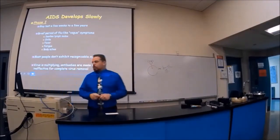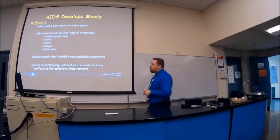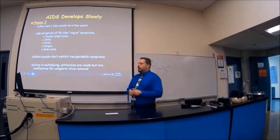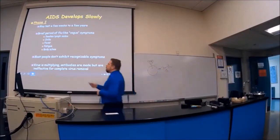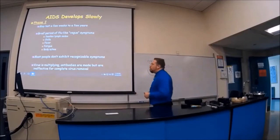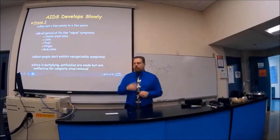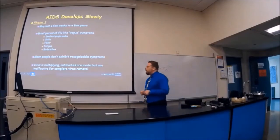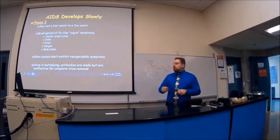So AIDS develops slowly. You've got phase one. And what happens here, it may last a few weeks to a few years. It's different for each person in the variant of HIV. It may start off as a brief period of just flu-like vague symptoms. Swollen lymph nodes, chills, fevers, fatigue, body aches. It's almost like you're taking A and P and that's how you're feeling, right? It's that vague kind of thing that's happening. And most people don't exhibit recognizable symptoms. They don't realize that that's what's happening with them. They've got a runny nose or something like that. But in the meantime, the virus is multiplying. And antibodies are made but are ineffective for the complete virus removal. It's just because it keeps changing.